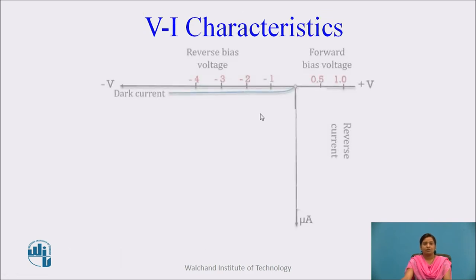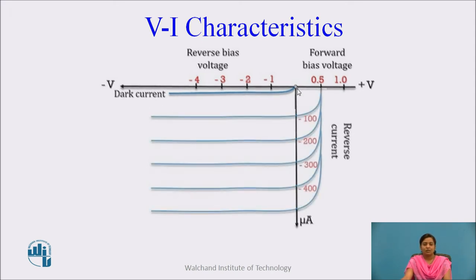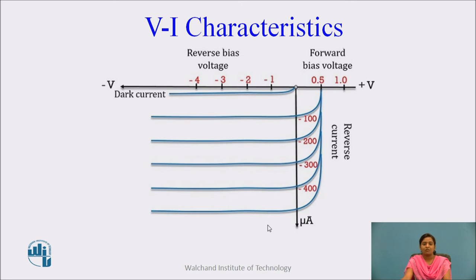The VI characteristic of the photodiode: on the x-axis is the reverse bias voltage and on the y-axis is the reverse current. Initially, a very small dark current flows through the device due to minority charge carriers. As reverse voltage increases and light intensity increases, the equally spaced reverse current also increases. After a point, the reverse current is completely independent of reverse bias voltage and depends only on the intensity of light — as intensity increases, reverse current also increases.